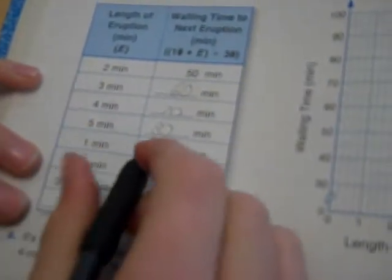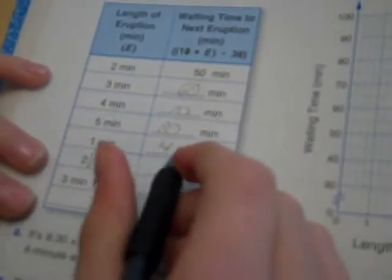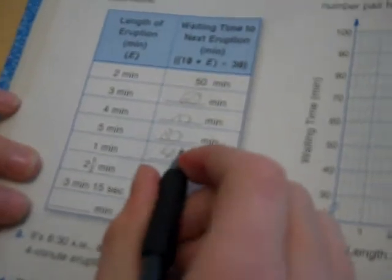If the eruption time was 1 minute, so it's 10 times 1, plus 30. Let's say 1 minute times 10 is 10, plus 30 is 40. Thank you. I totally messed that up.